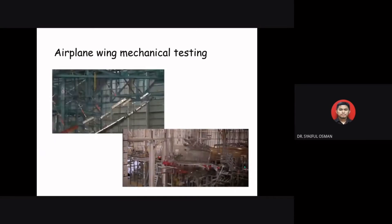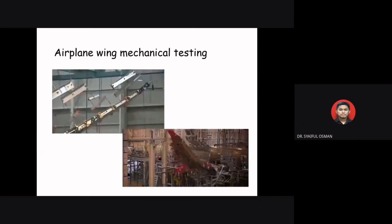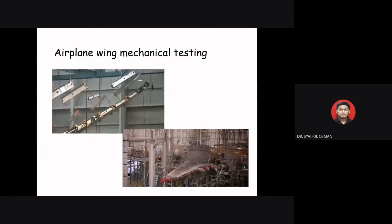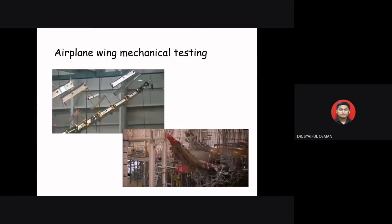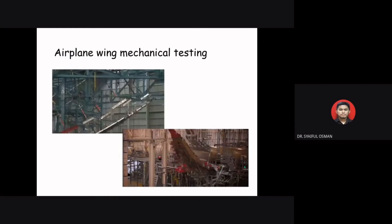Here we can see how mechanical testing of an airplane wing is conducted. The wings of a Boeing 777 undergo a test known as wing-up bending testing or static testing. The process is quite simple — we drag the wing up until it snaps, in order to find out exactly how flexible it is.